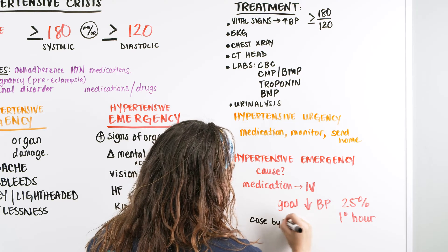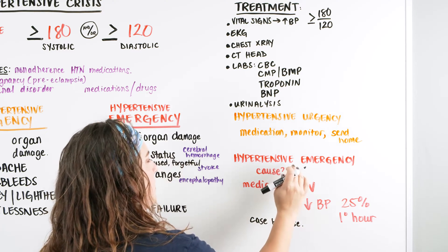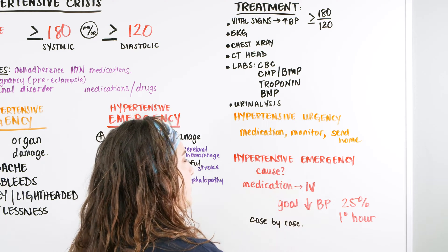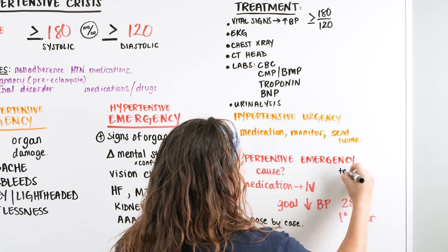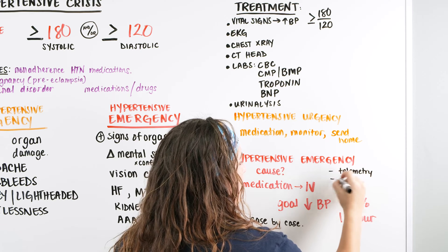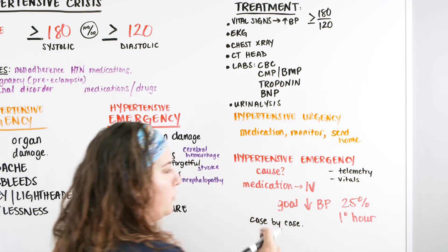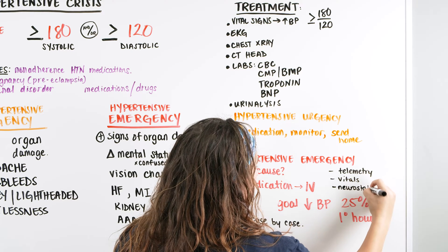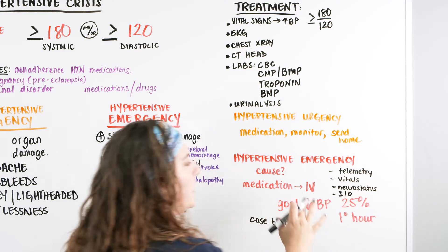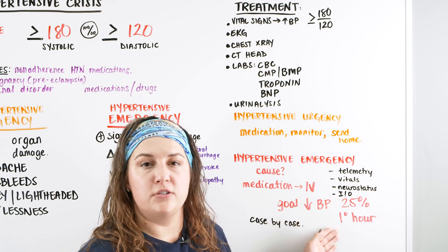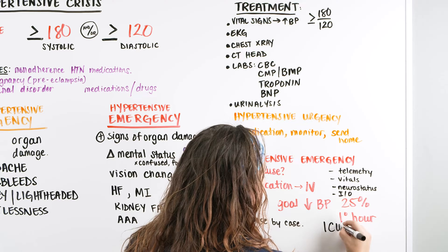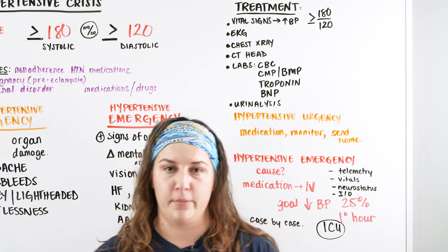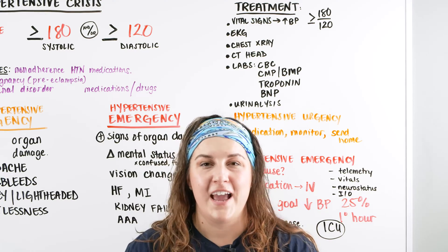We don't want blood pressure dropping too fast — going from 180/120 down to 100/80 rapidly can cause perfusion problems and adverse effects. We need a steady, controlled drop. These patients will be on telemetry, vital signs every 15 minutes to one hour, neuro status checks, and strict intake and output monitoring. Due to the severity of their condition, hypertensive emergency patients are typically transferred to the ICU for the first 24 hours.